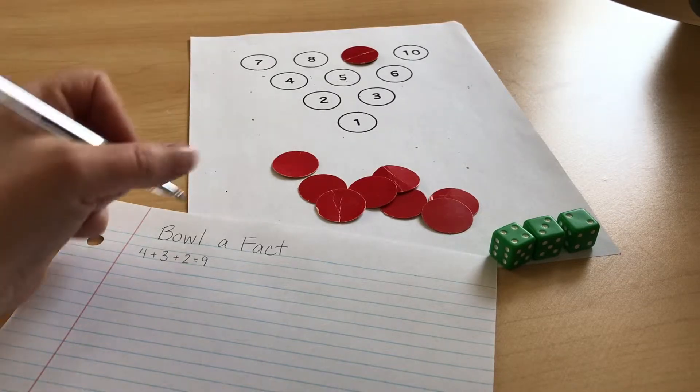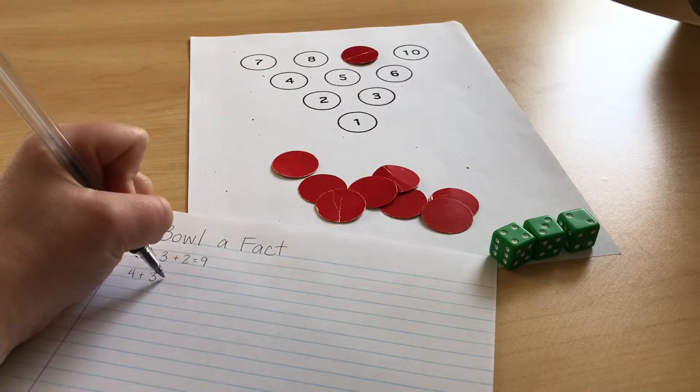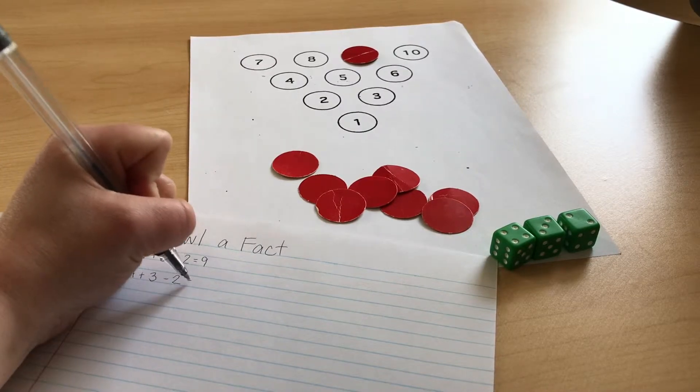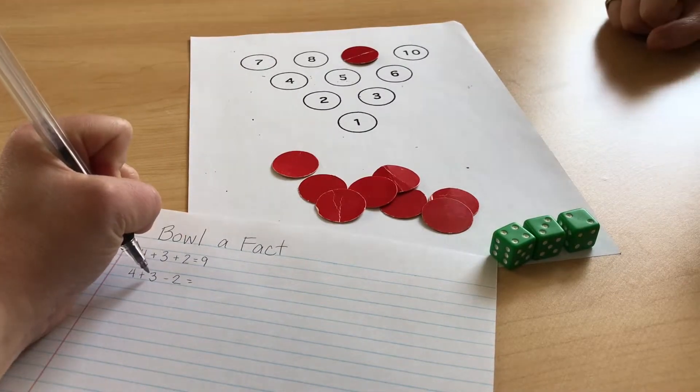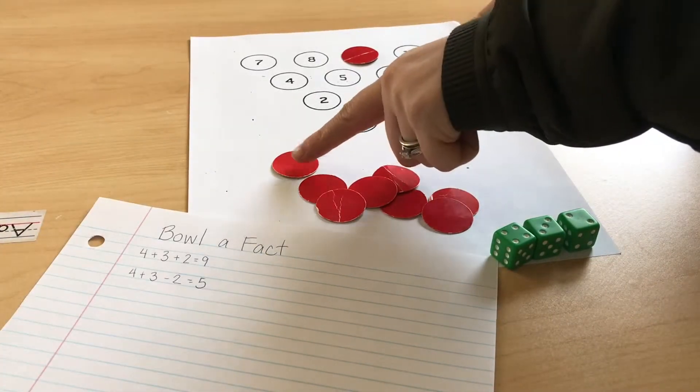I'm going to do four plus three again, which gives me seven. But instead of adding two, I'm going to take away two. Four plus three is seven, take away two gives me five. So we can cover up the five as well.